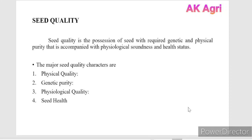There are mainly four characters or four components of seed quality. The first one is physical purity, then genetic purity, physiological quality, and seed health.